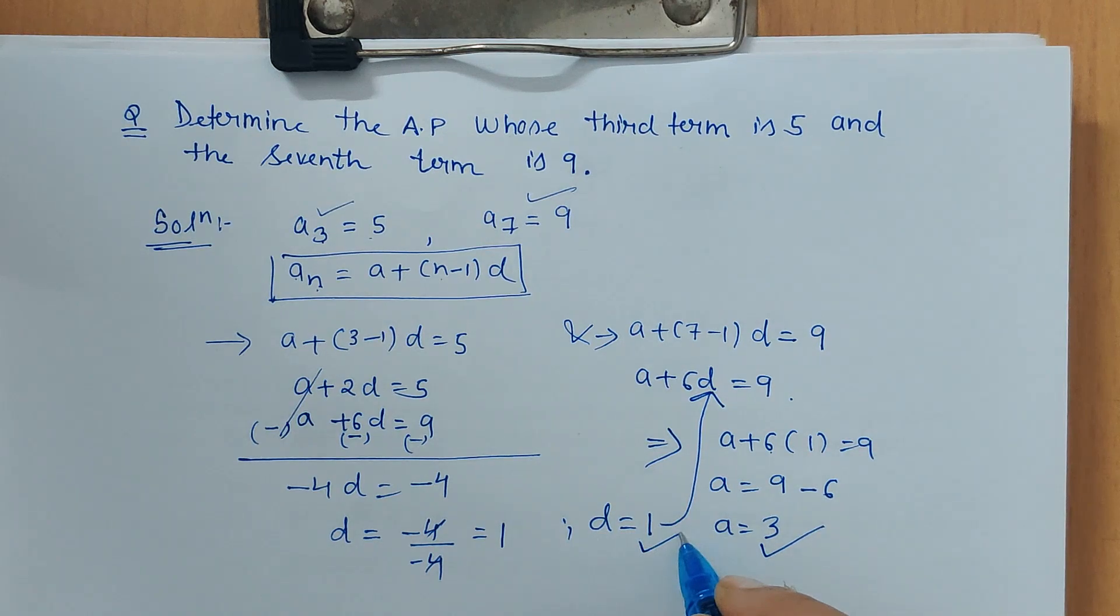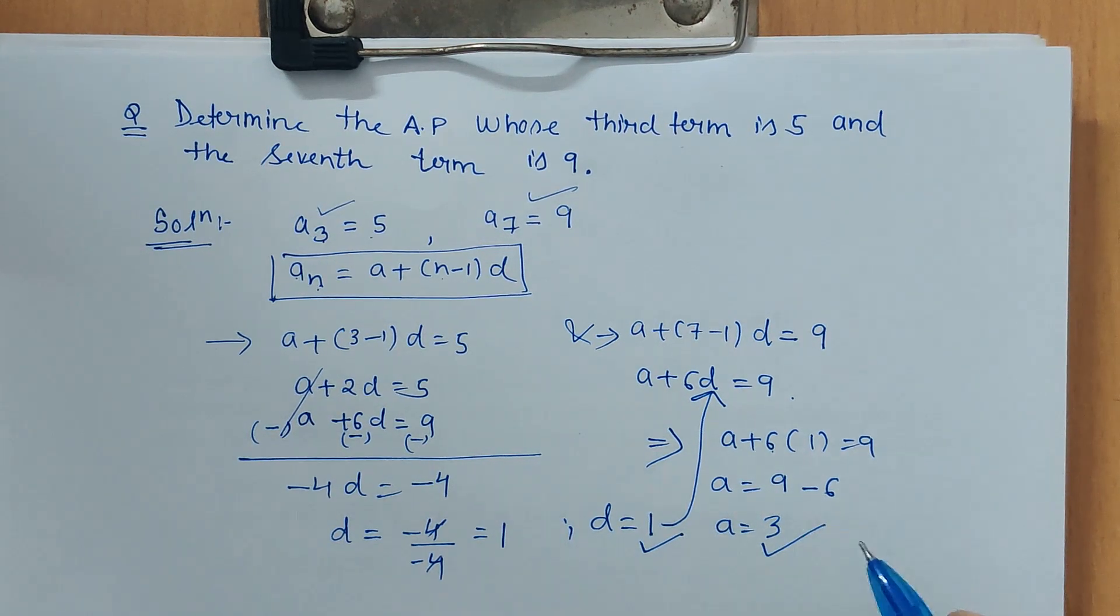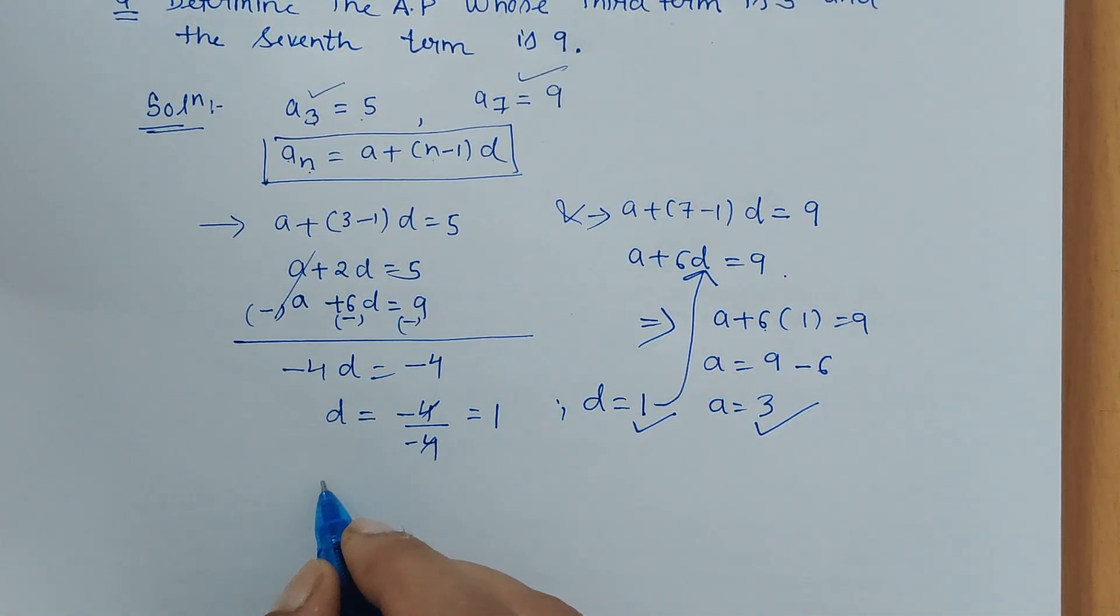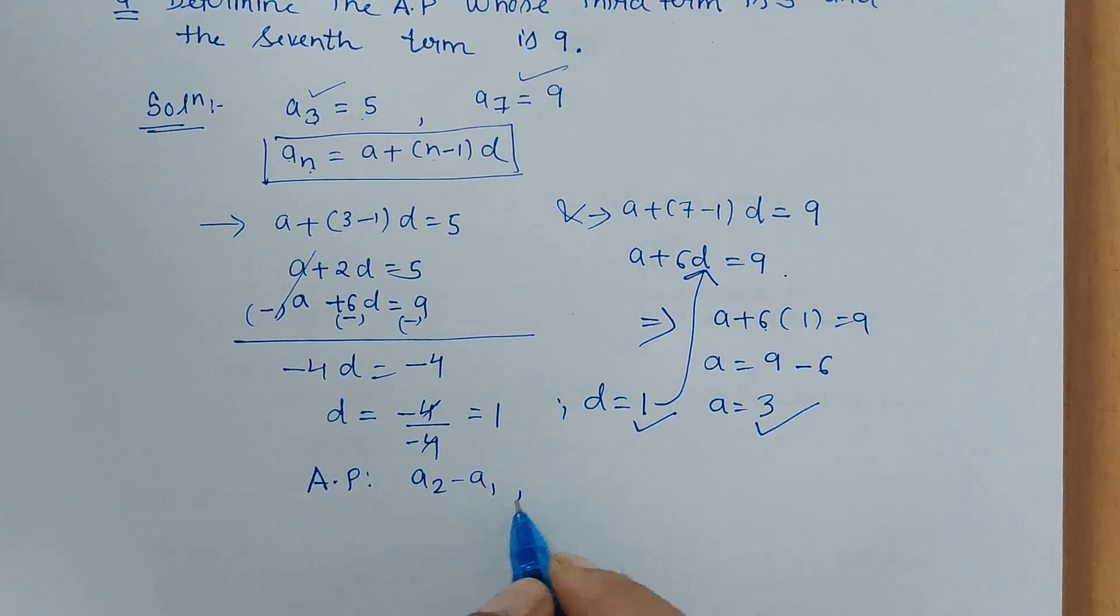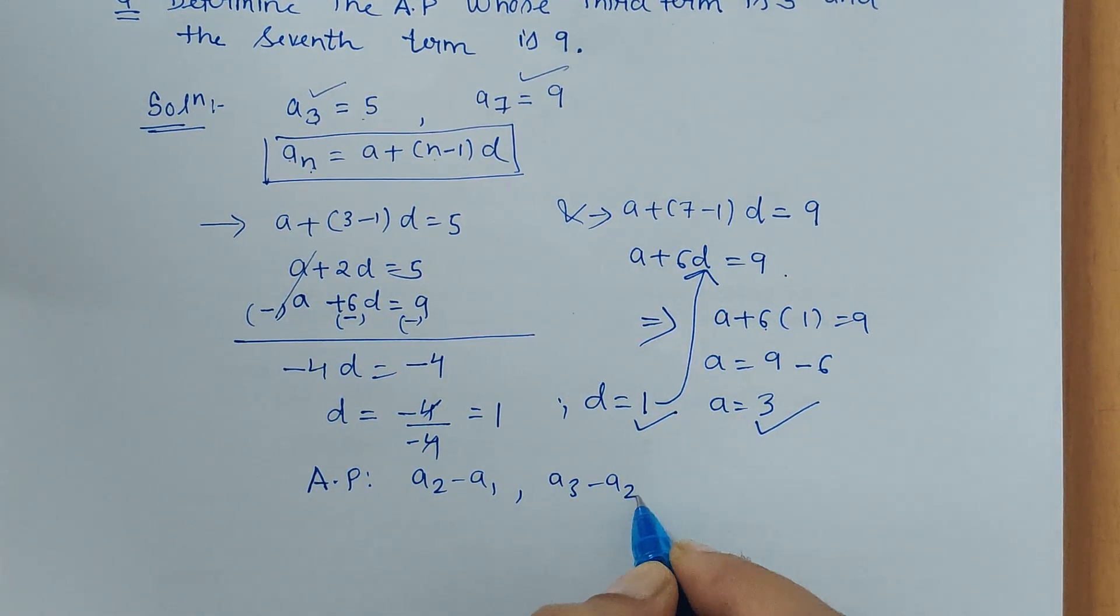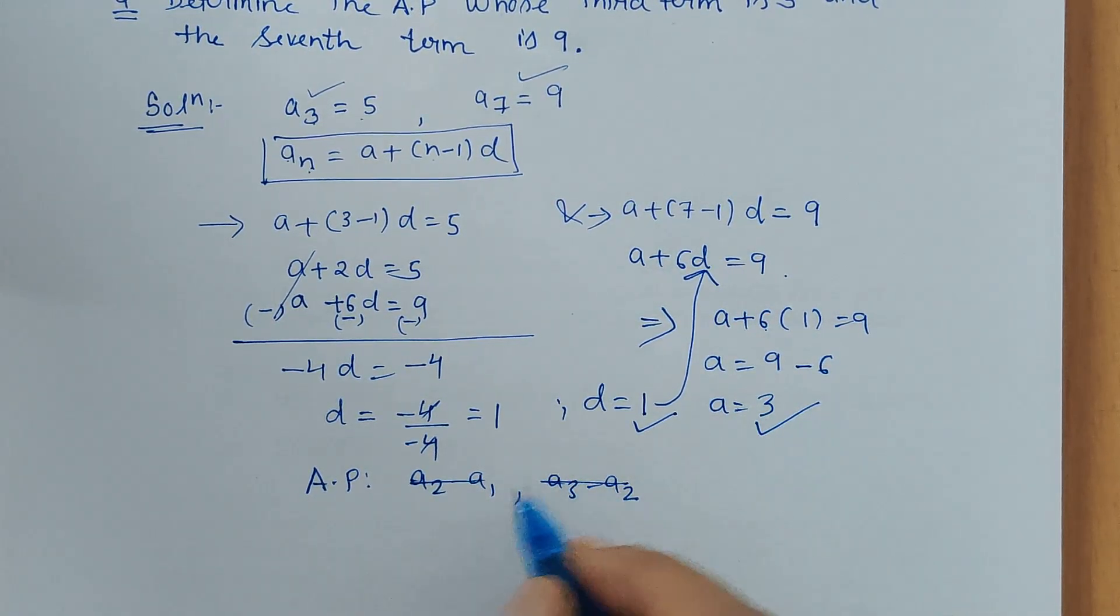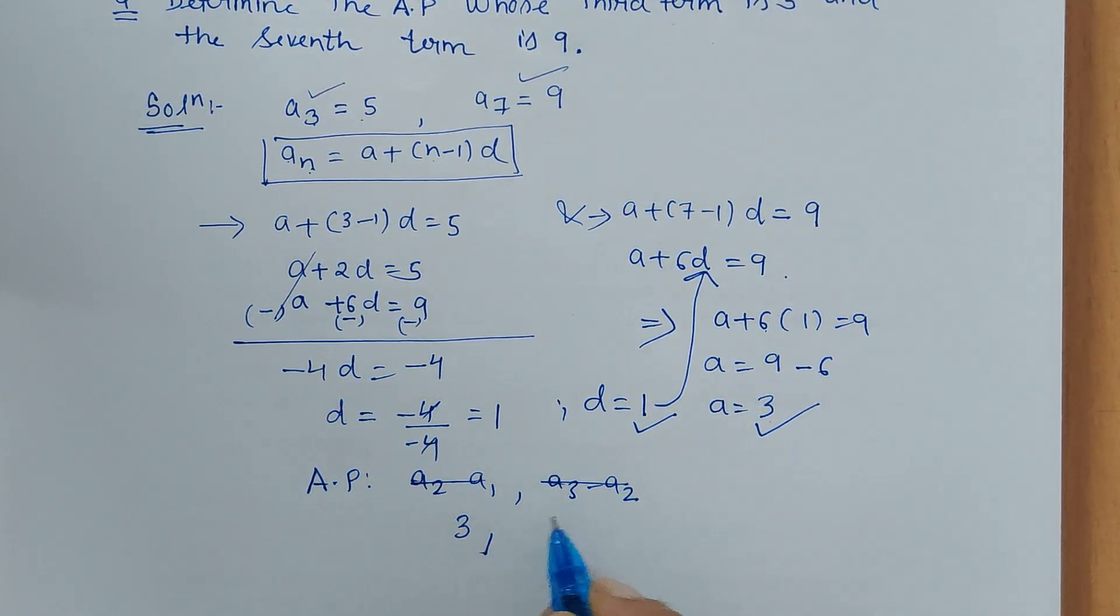When we have the first term 3 and the common difference 1, we can easily frame the arithmetic sequence. The arithmetic sequence is formed by the common differences, so we just have to write: first term is 3, second term is 4, then 5, then 6, and it goes on.